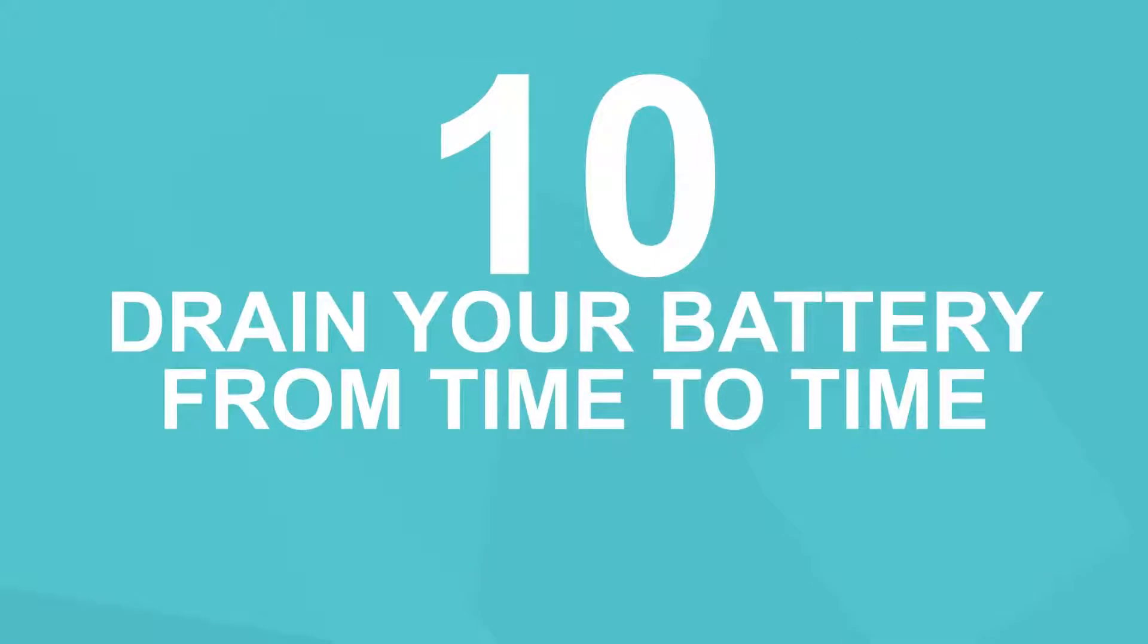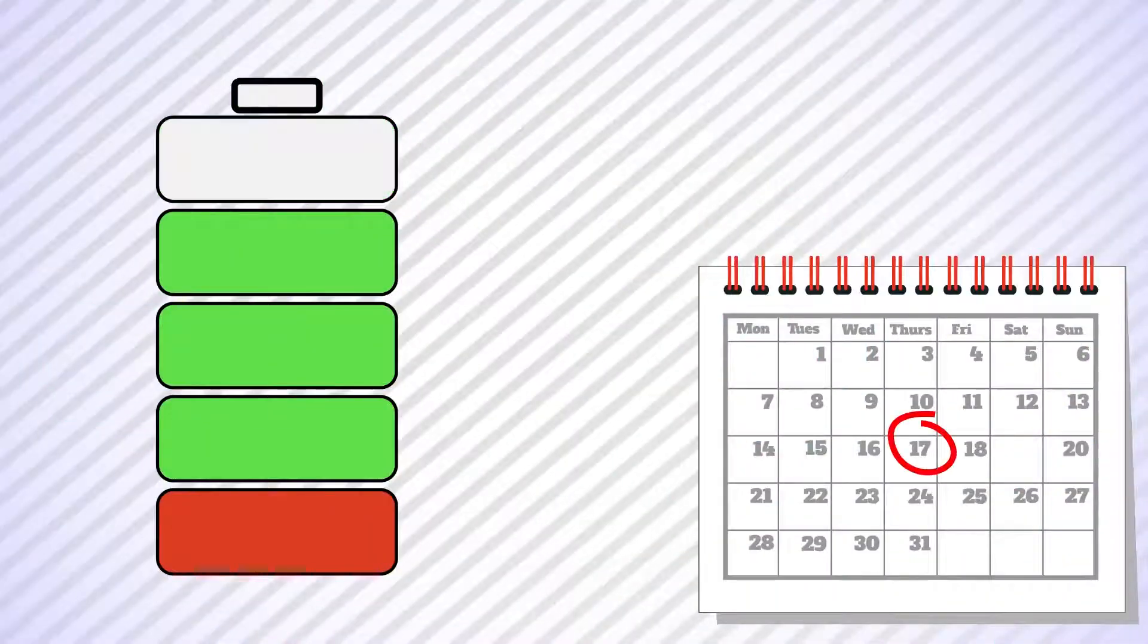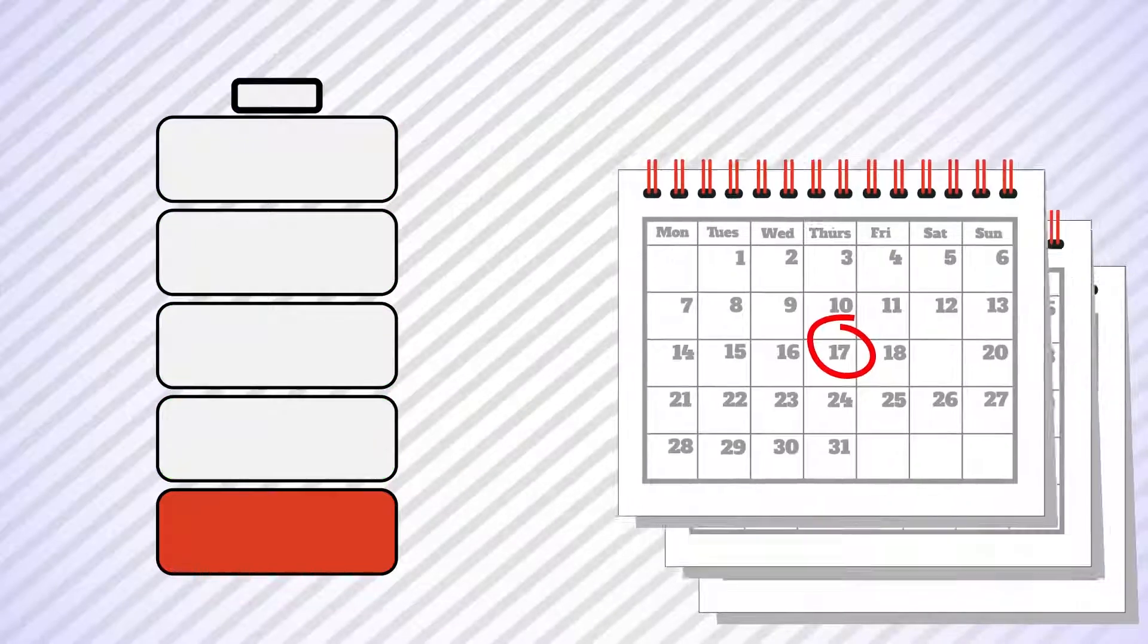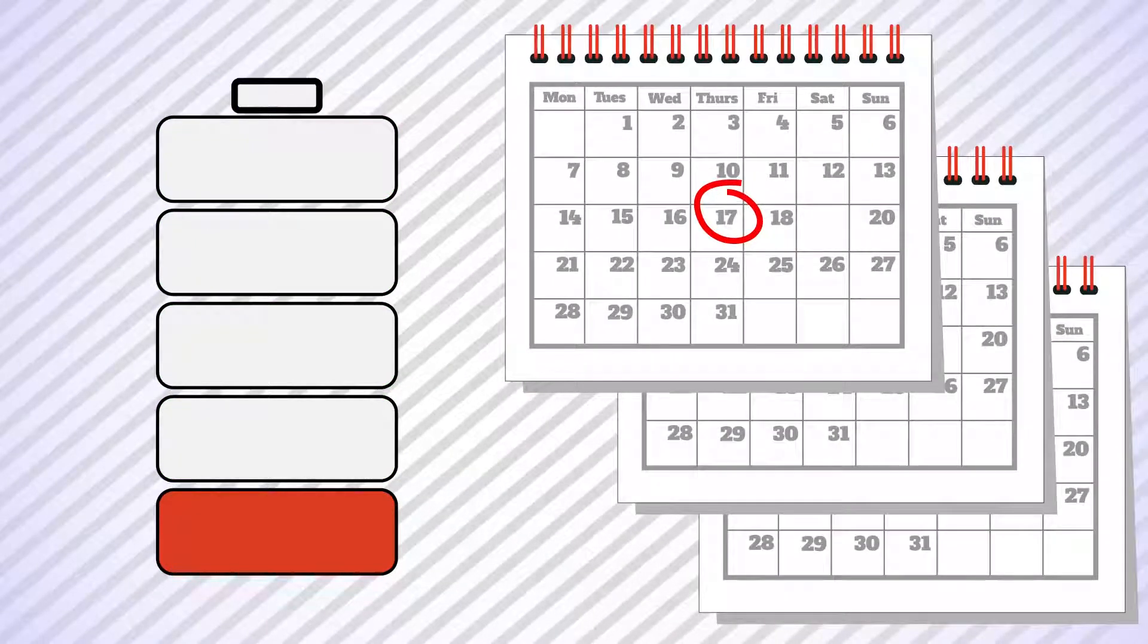Number 10. Drain your battery from time to time. It is recommended to discharge your phone's battery every 3 months to 0%, and then immediately charge it to 100% to get rid of the extremes of full charge slash discharge.